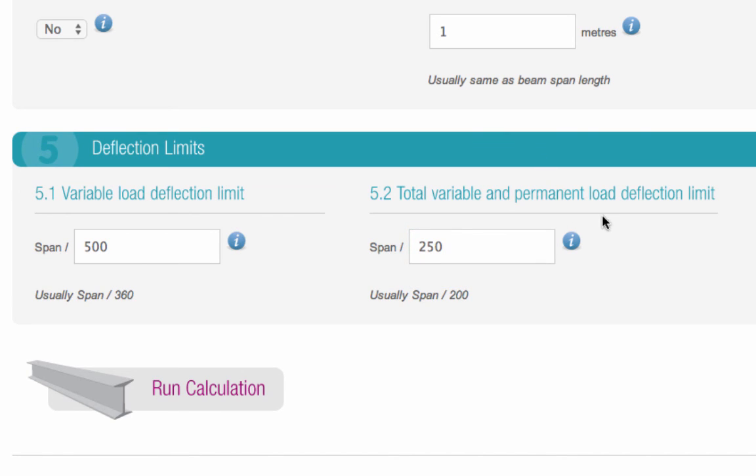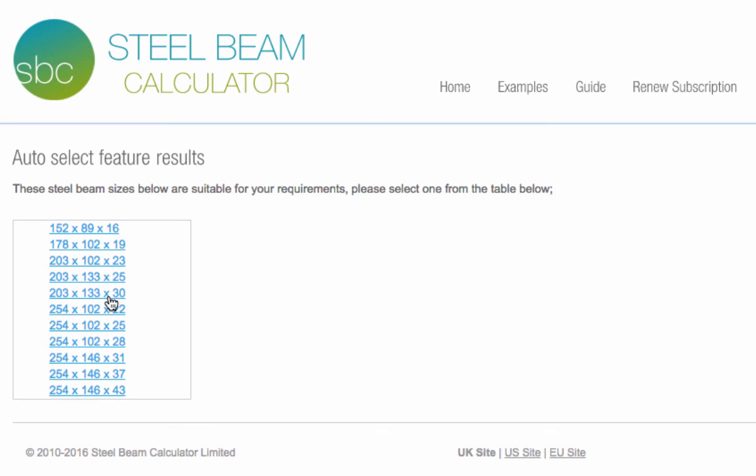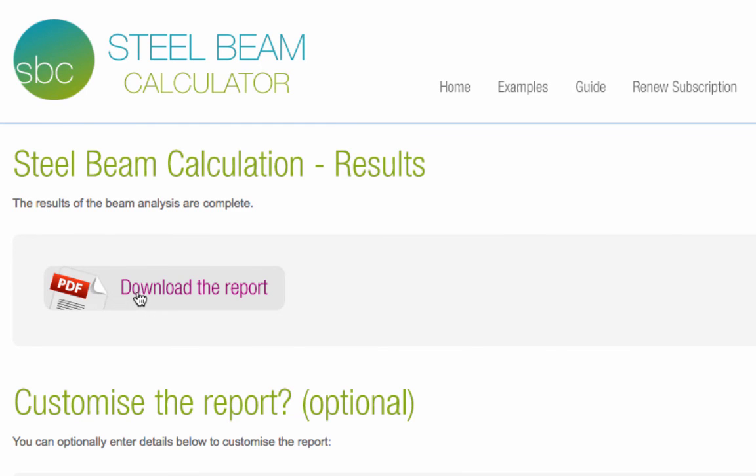And that's all the information we need. Now you just have to press the Run Calculation button. If you left the Auto Beam Select Feature dropdown set to Yes, the calculator will now show you a list of suitable beam sizes for your project. Choose one from the list and your PDF report will appear within seconds.